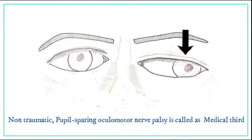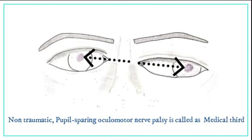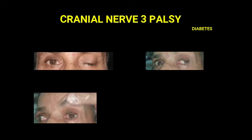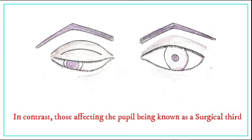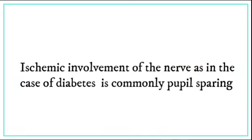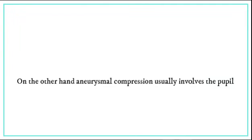Non-traumatic, pupil-sparing oculomotor nerve palsy is called a medical third. In contrast, those affecting the pupil are known as a surgical third. Ischemic involvement of the nerve, as in the case of diabetes, is commonly pupil sparing. On the other hand, aneurysmal compression usually involves the pupil.